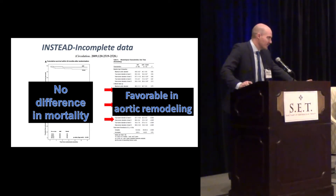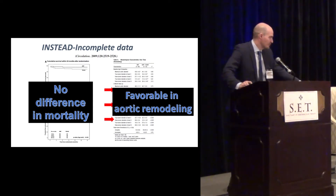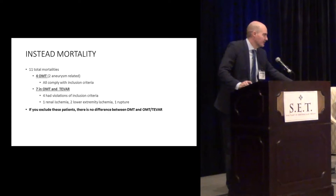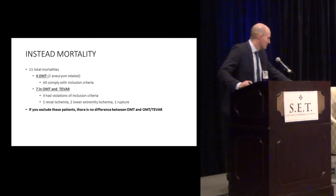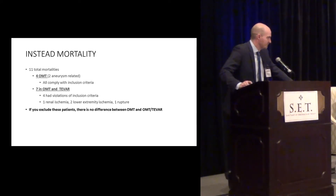However, when you start digging a little bit more and looking at false lumen diameter and true lumen diameter, you know that there is a lot of variability in aortic remodeling. You also see that false lumen thrombosis in most of the patients required TEVAR. And when you get into the mortality: there were 11 mortalities in the trial — 4 in optimal medical therapy, all complying with inclusion criteria — and 7 in the TEVAR group. But 4 of those patients had violation of the inclusion criteria; they were complicated cases included in the trial. So if you exclude those patients, the mortality is exactly the same.